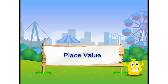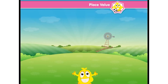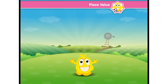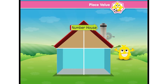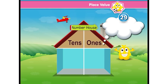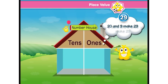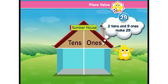Place value! Hey friends, today we will learn about place value. It is simple. Let's imagine a number living in a house with two rooms: tens and ones. Now if we see a number 29, we know that 20 and 9 make 29, or we can say two tens and nine ones make 29.